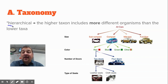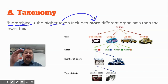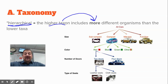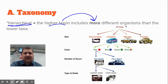Taxonomy is very hierarchical. The higher taxons are going to include more things. If you're at the kingdom level — that's the top — that's going to include way more organisms than if you're down at the species level, which is just one type of organism. You can see an example hierarchy or classification system here.